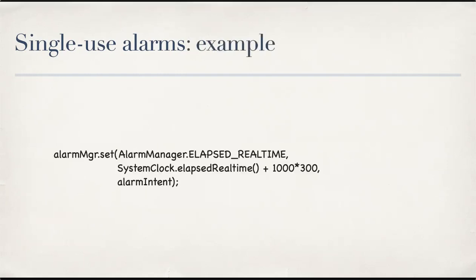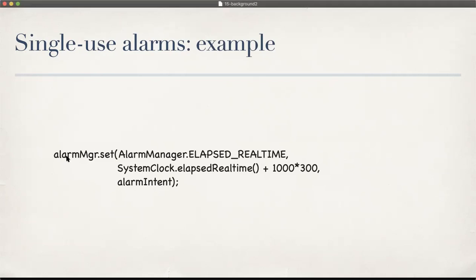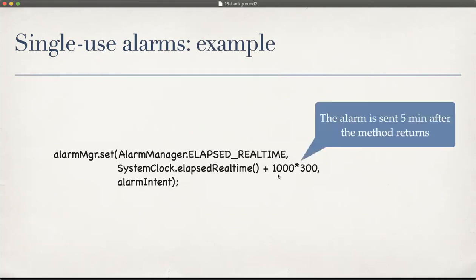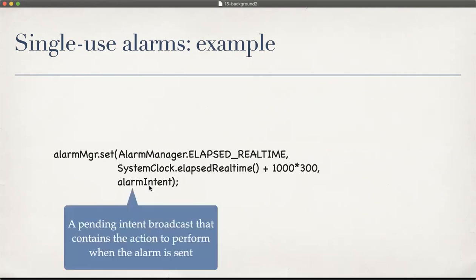Here is a code example of single-use alarms. You get the AlarmManager instance as before and call set(). This version of set() specifies elapsed real time, and then says do it after this many milliseconds — 300,000 milliseconds, which is 300 seconds, or five minutes. The alarm intent is a pending intent that you would broadcast, and something else will catch it and act on it.